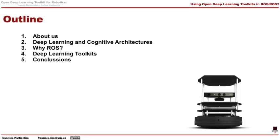This talk is organized in these points. First of all, we'll talk about us, about our research lab. Secondly, we'll talk about how to integrate deep learning in cognitive architecture in social robots. In the third point, we will explain what is ROS and why ROS is useful to democratize this kind of technology. In the fourth point, we will present the deep learning toolkit we are using in our robots, and we will finish with some conclusions.